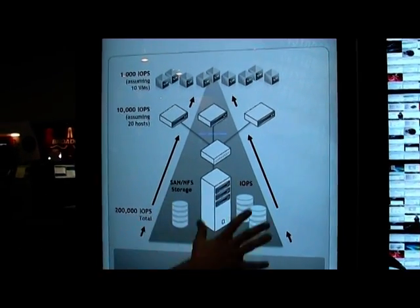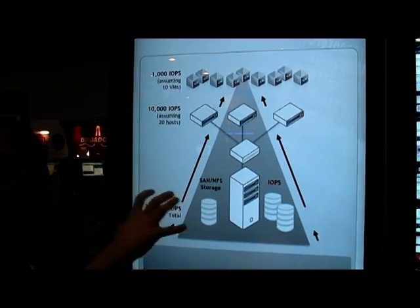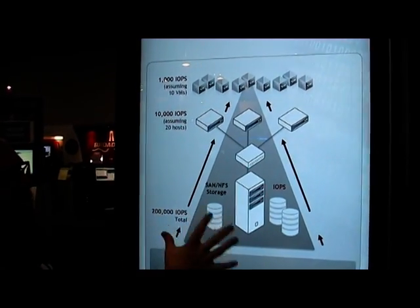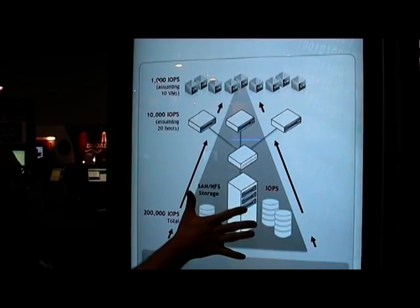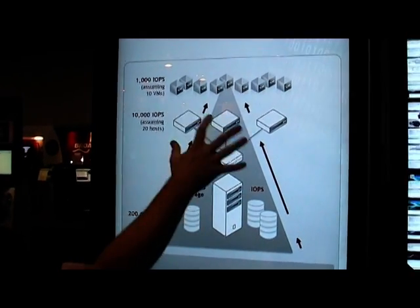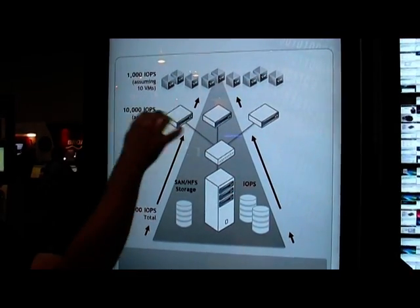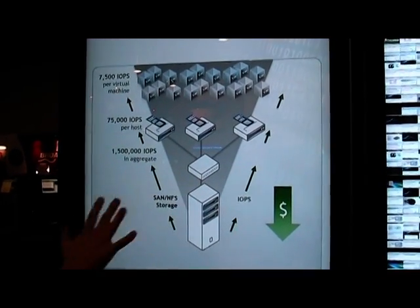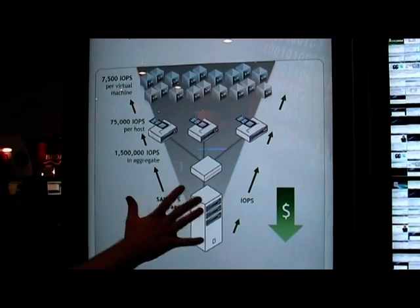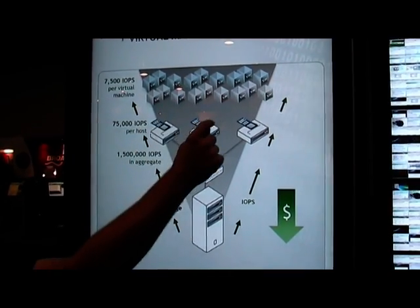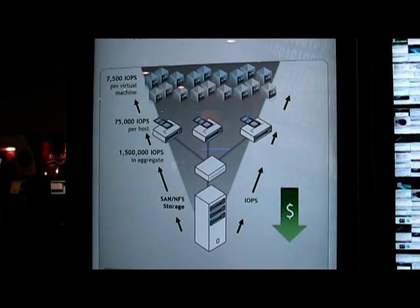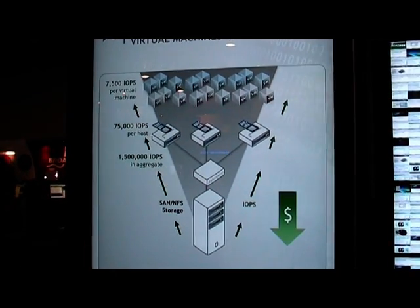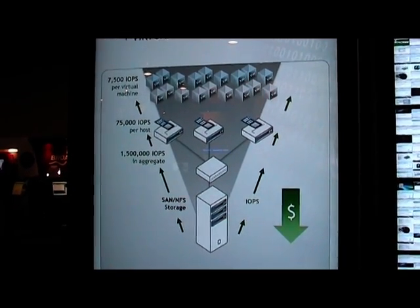So you need to provision this massive SAN to handle your users. With FusionIO, what we do is we turn this upside down. Instead of having a massive amount of IOPs going and getting split up between your hosts, what we do is say just use commodity storage. You don't have to predict the size of this, and then use FusionIO cards at your ESX hosts. Now you've got a nice modular system that can grow with you — you need 100 more users, you add another module.